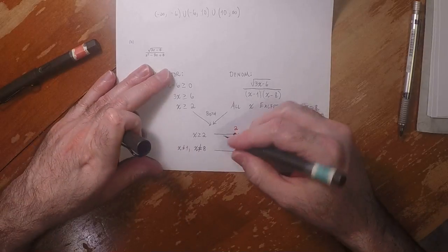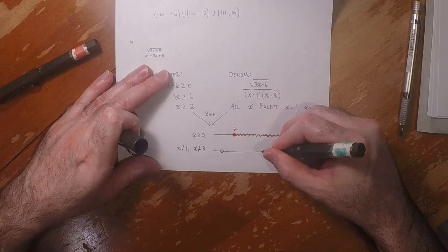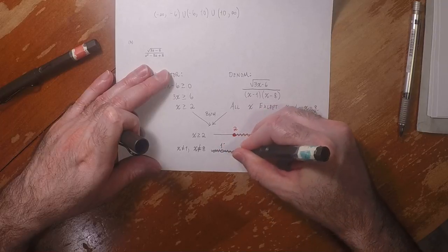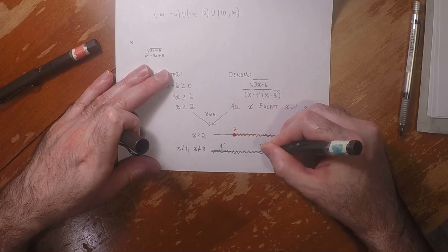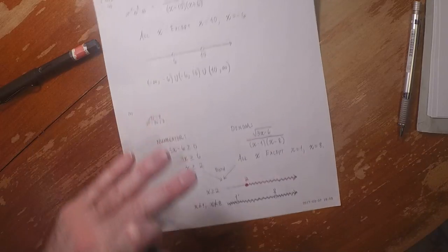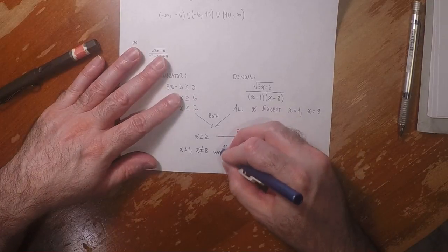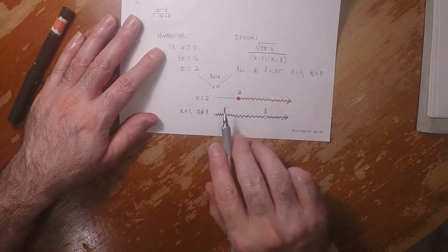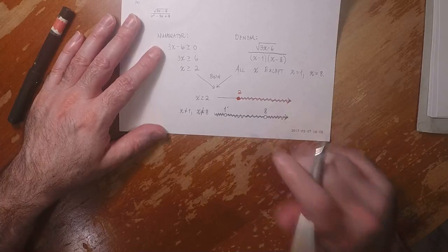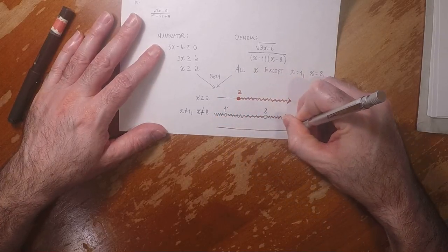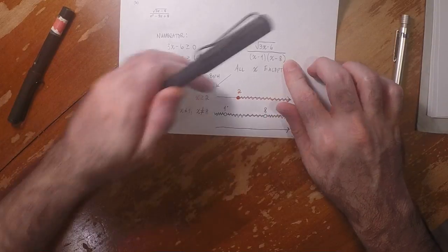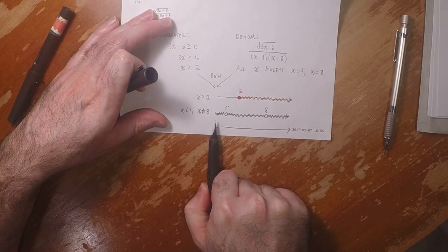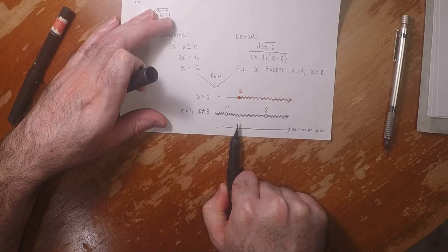Anything but 1 or 8 looks like this, so 1 and 8. So that's 1, that's 8. So the answer to the question is anywhere we have points that are both red and green. Points back here are green but not also red, and then the place where we have red and green at the same time begins here at 2.